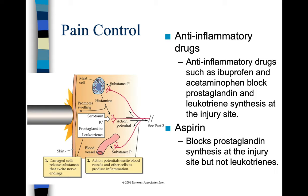Anti-inflammatory drugs such as ibuprofen and acetaminophen block prostaglandins and leukotriene synthesis at the injury site. Aspirin blocks prostaglandins at the injury site but not leukotrienes. This is one of the reasons ibuprofen and acetaminophen work as well as they do. However, both ibuprofen and acetaminophen can damage your liver, so you don't want to take either over an extended length of time. Acetaminophen does more damage to your liver than ibuprofen.